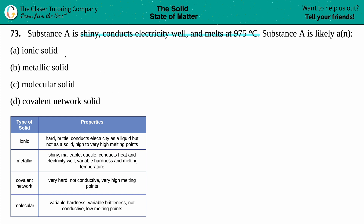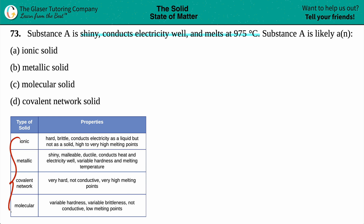Is Substance A going to be an ionic solid, metallic solid, molecular solid, or a covalent network solid? We have to know our four different types of crystalline solids, which are right here, and their properties.